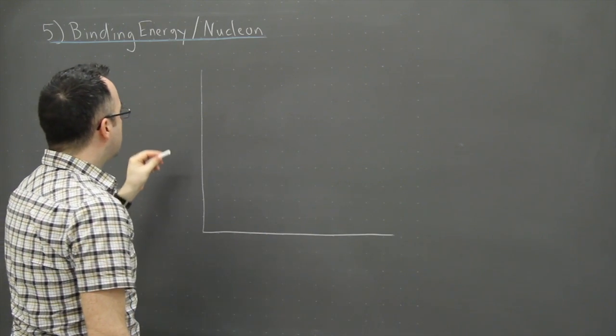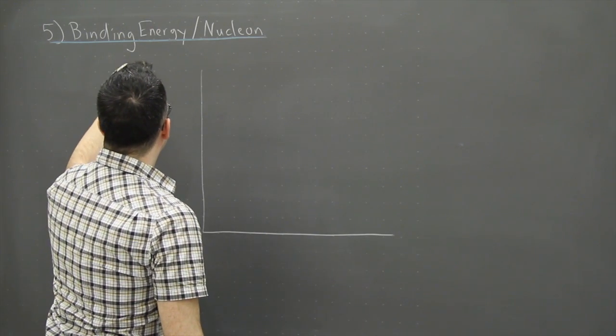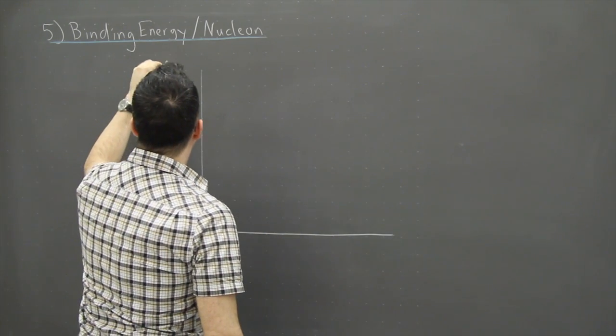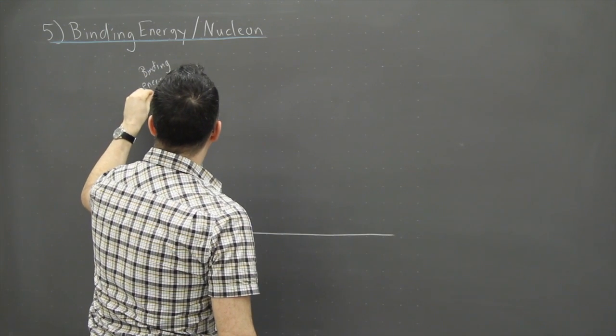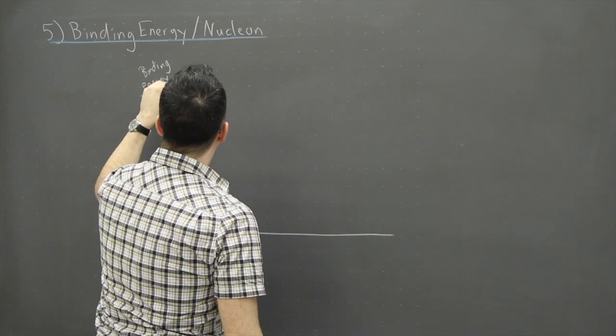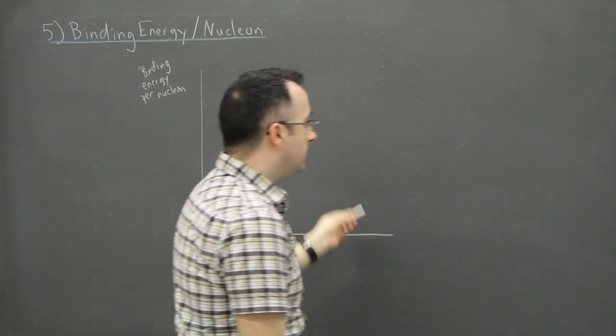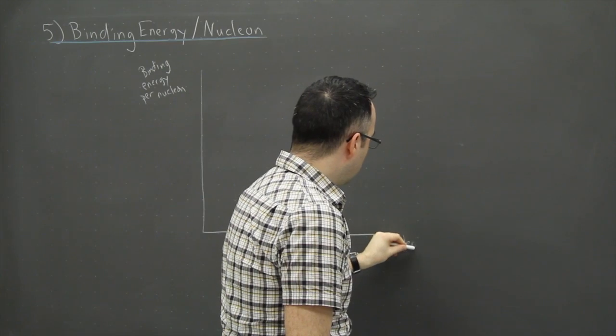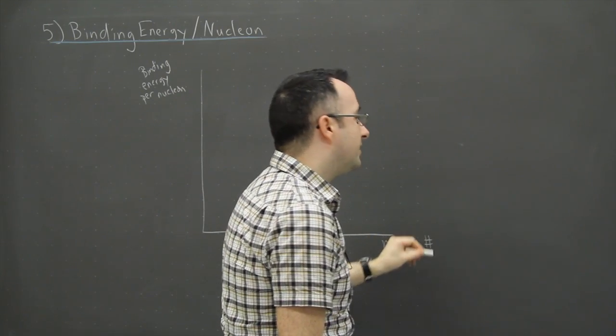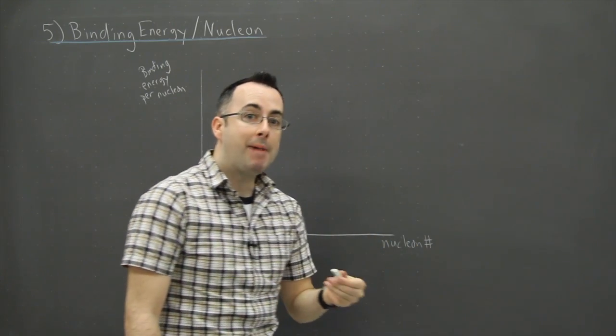And I'm going to say this will be the binding energy per nucleon. And this right here is going to be then, well if I want the nucleon number, that's otherwise known as the mass number.